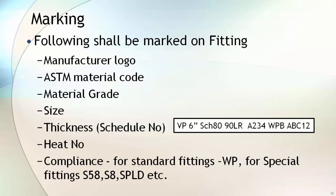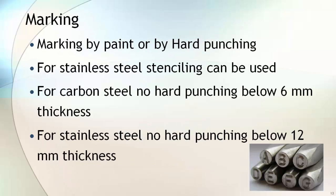Once the fittings have cleared all inspections, they should be marked as per the standard requirement. The standard mandates that each fitting shall be marked with the manufacturer's logo, ASME, material code, material grade, size, thickness, heat number, and compliance for the standard fitting such as WP and H58 for special fittings. In the case of tees and reducers, the size and thickness of both ends and the run pipe shall be marked. Marking can be done by painting or by hard punching. For stainless steel, stenciling can be used. For carbon steel, no hard punching below 6mm, and for stainless steel, no hard punching below 12mm.